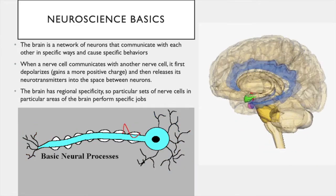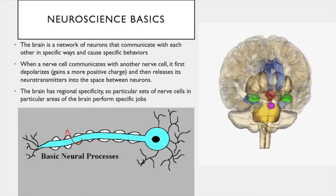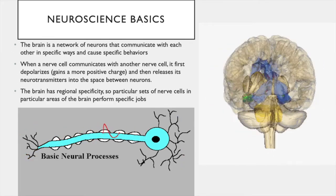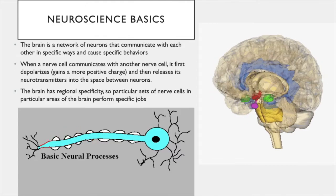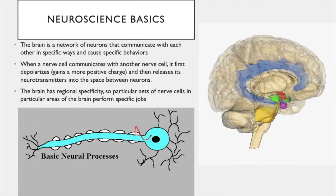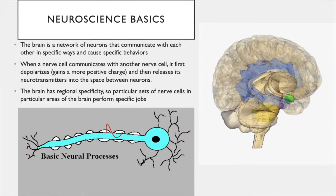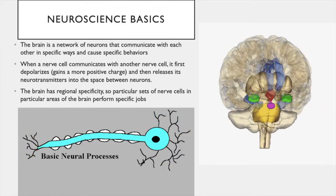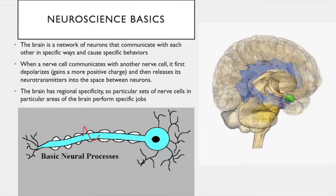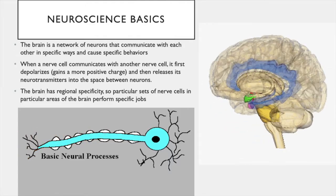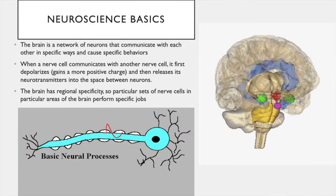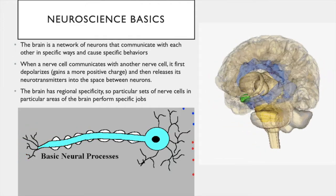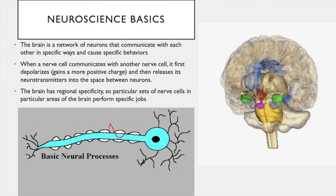The brain has regional specificity, so particular sets of nerve cells in particular brain areas perform specific jobs. A few brain regions with different jobs are highlighted. In green is an area called the amygdala, which plays a critical role in fear responses. In purple is the pituitary gland, which releases hormones into your bloodstream. In red is the hypothalamus, which plays a major role in maintaining homeostasis. And in yellow is the pons, which plays a role in controlling sleep.